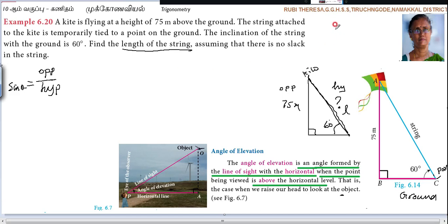So I already told you. 0, 30, 45, 60, 90. This 90 and 0 just will leave it. These three: 30 means 1 by 2. Here 1 by root 2. Here 60 means root 3 by 2. So 1 by 2, 1 by root 2, root 3 by 2.